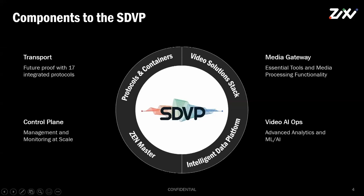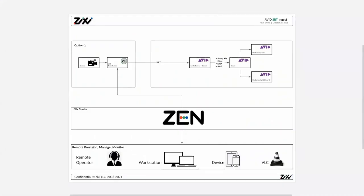Contribution into Avid via Zixi can come from any Zixi-enabled device sending SRT — directly into Media Central Stream or through the Zixi Broadcaster — supporting live news contribution, remote live production, or 24x7 linear channels over IP. Paul Shore walks through the configuration of Zixi Zen Master running across the top of a Zixi Broadcaster delivering a feed via SRT into Media Central.